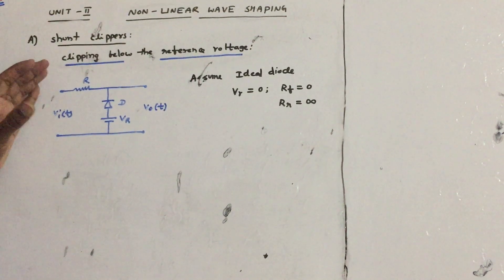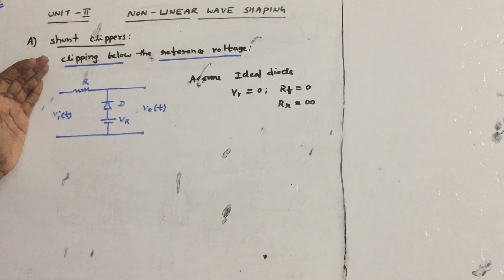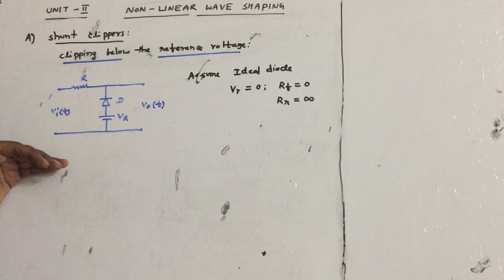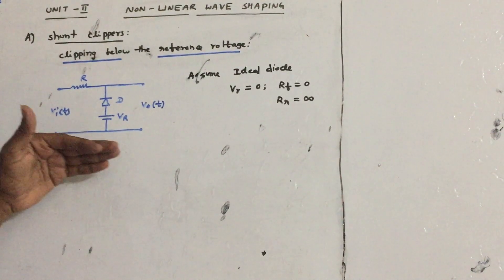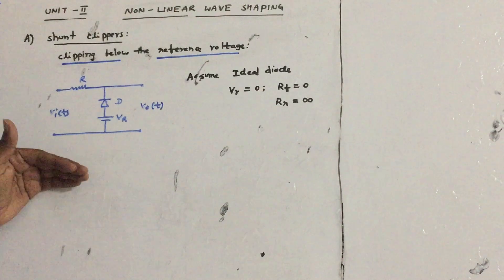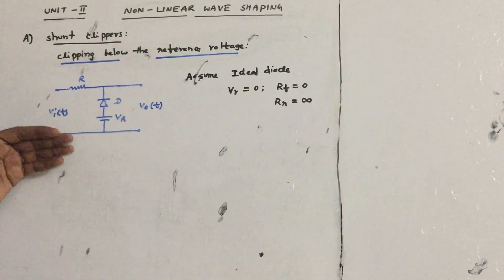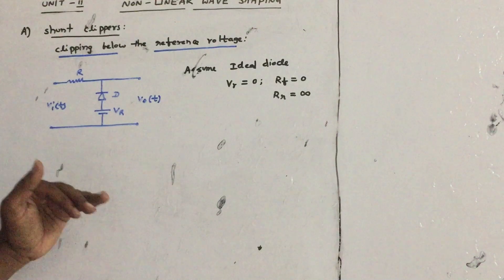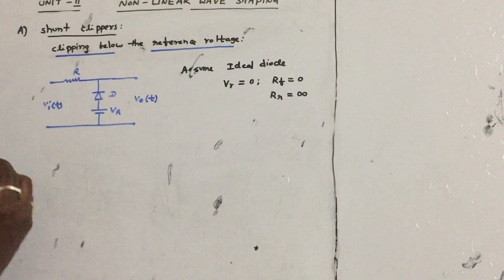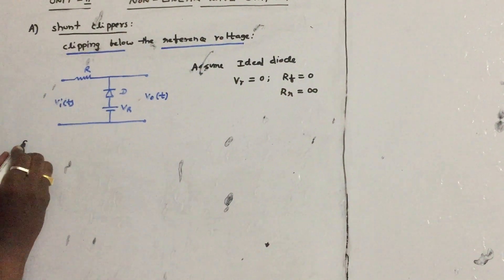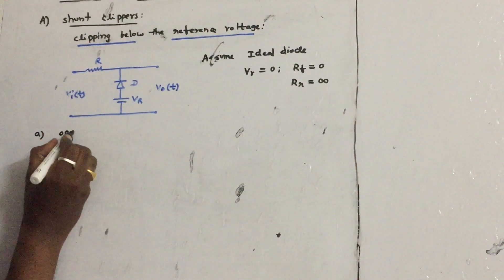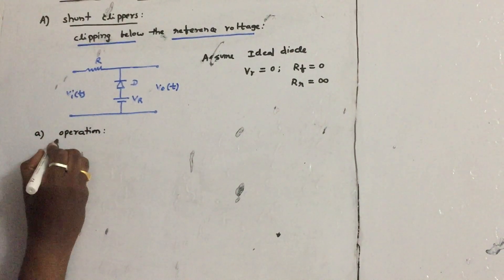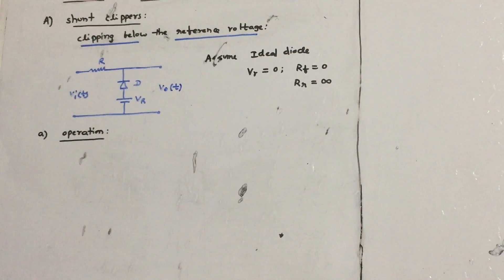The circuit analysis is divided into three parts. First: the operation of the circuit. Second: drawing the transfer characteristics between input and output. Finally: when a sinusoidal input is applied, what will be the output. Let us discuss these points one by one, starting with A — the operation of the circuit.